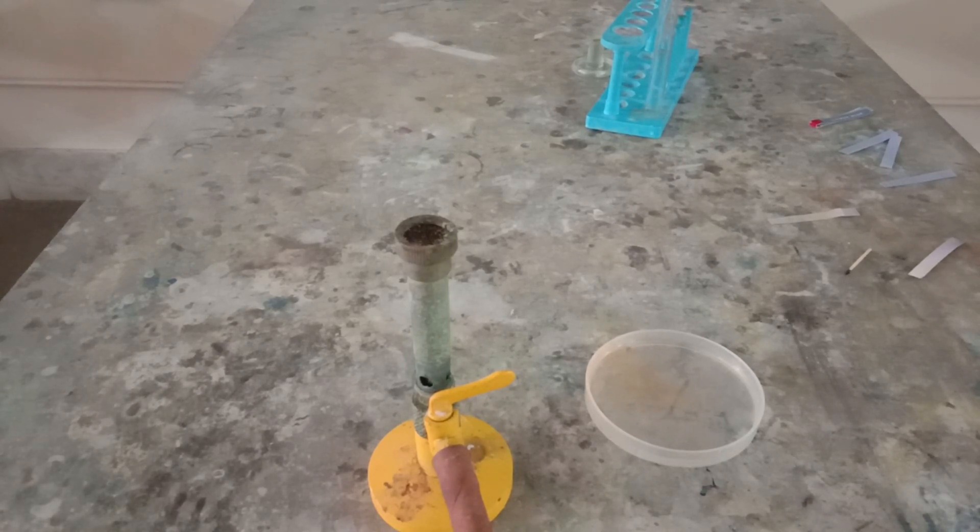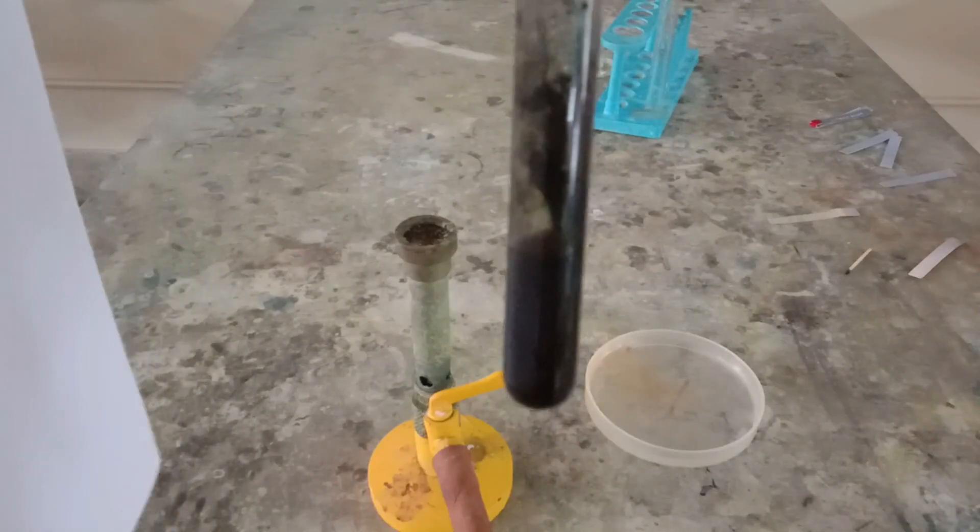I'm going to place this test tube in front of a white background, an A4 size paper, so you can see a very light yellowish color gas present inside the test tube. This gas is chlorine gas.